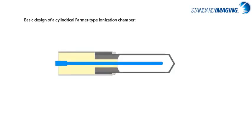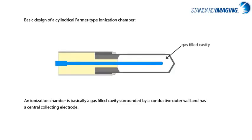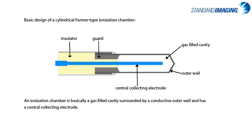Consider the image of a basic thimble-type ionization chamber. There are three main parts: a gas-filled cavity, an outer wall, and the central collecting electrode. The guard is the other absolutely essential component and could be considered the most important, as it not only guards the desired signal of interest but also defines the collecting volume. A voltage is applied to the chamber — most chambers today apply a bias to the central electrode, leaving the outer wall at ground to avoid shock hazards.